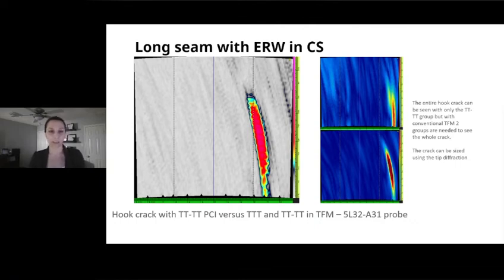That's the flaw we looked at earlier. This is actually a hook crack in a long seam ERW weld in carbon steel. The entire hook crack can be seen using only one mode. The 4T mode was used here. Where conventional had to look at two different modes to be able to size this hook crack properly. So that's also a benefit, being able to see a bit more, but also size more accurately by using the tip diffraction.